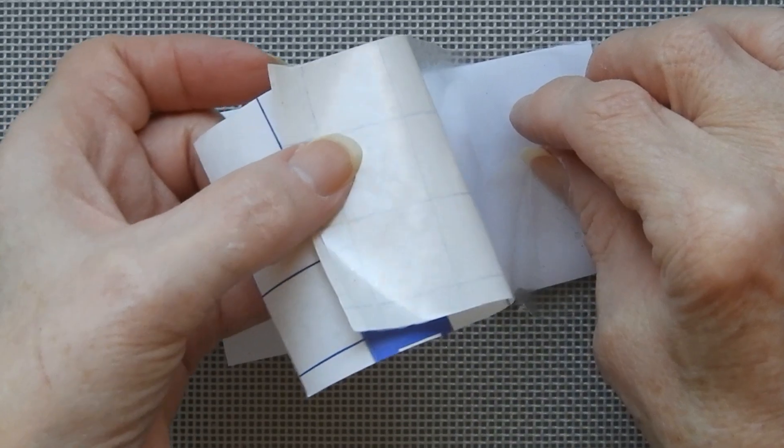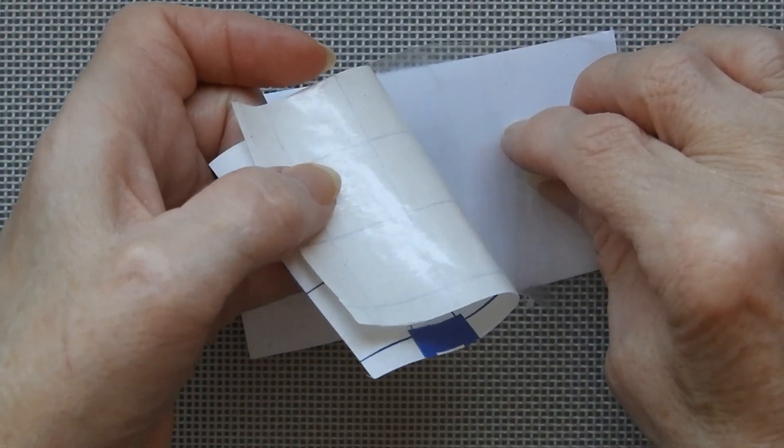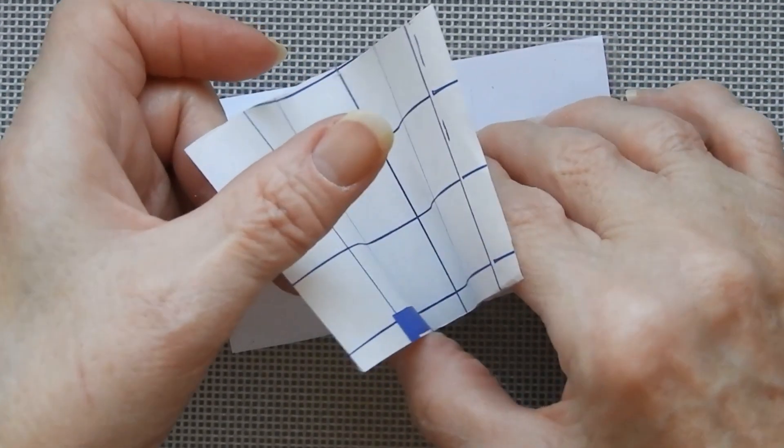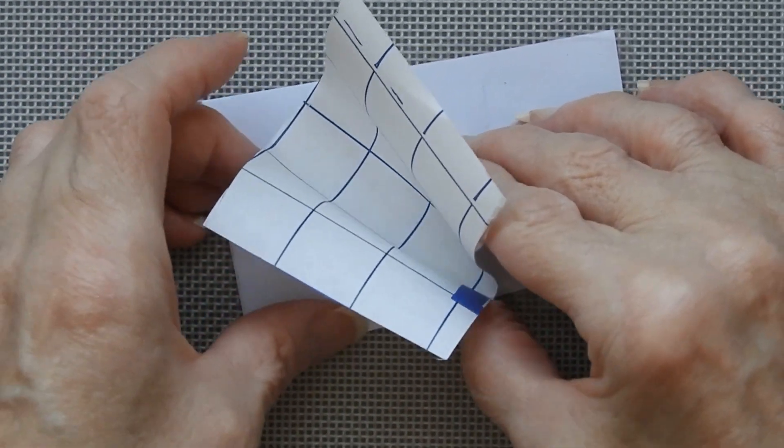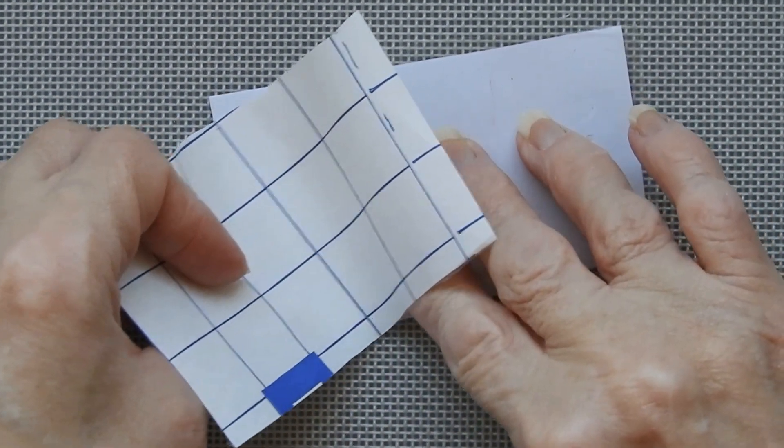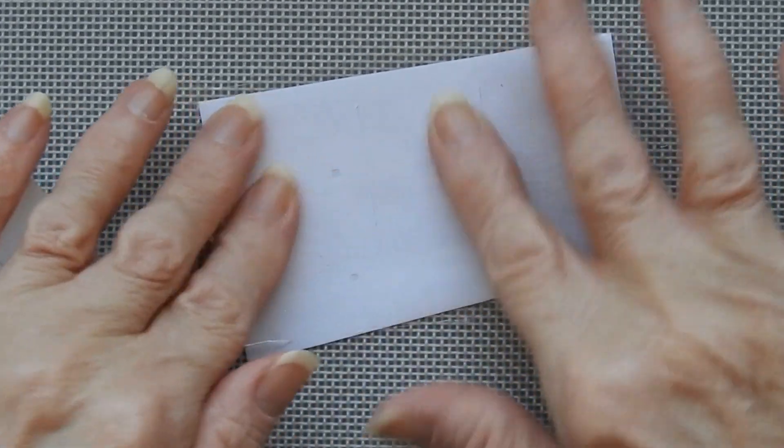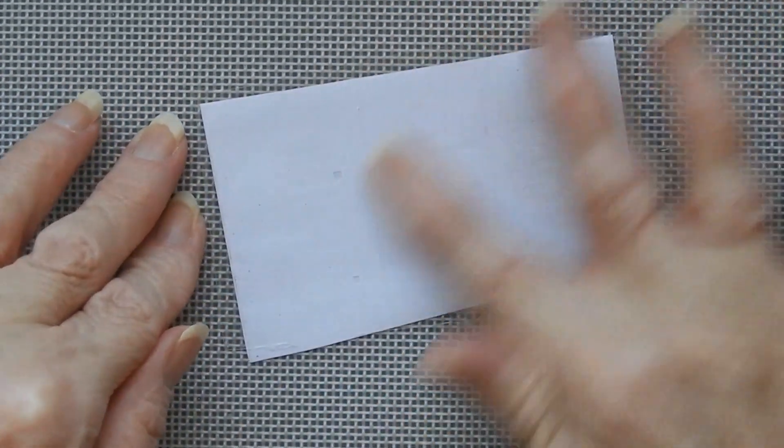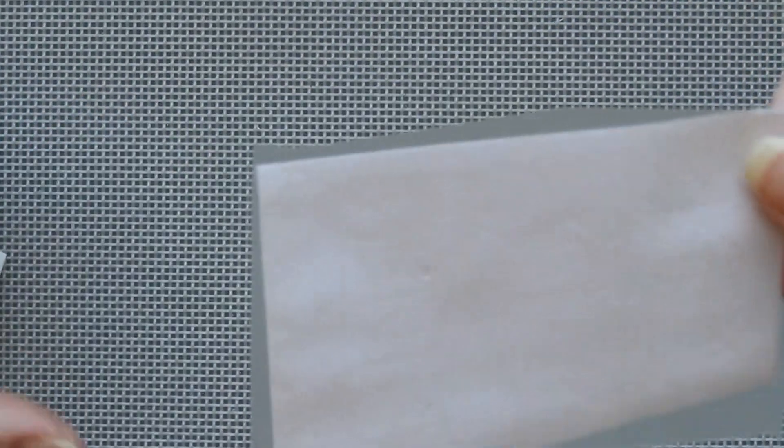I'm going to try reverse weeding, not something I've ever done before. But because these letters are so fine, I think that might be the easiest way of doing it without losing odd bits. So we shall see.